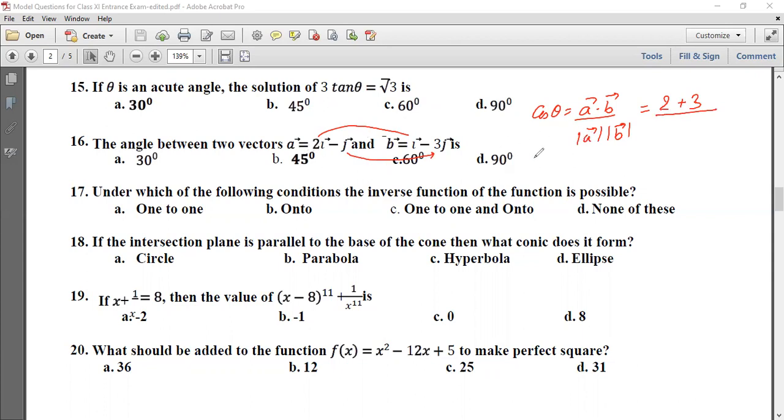2 plus 3 equals 5. By magnitude of a, we can write under root of coefficient of i square, 2 square plus coefficient of j square, minus 1 square, which is 4 plus 1, root 5. Magnitude of b is root of i coefficient square 1 plus j coefficient square minus 3 square, which is 1 plus 9, root 10. So 5 by root 5 into root 10, which is 5 by 5 root 2, equals 1 by root 2, which means theta is 45 degrees.